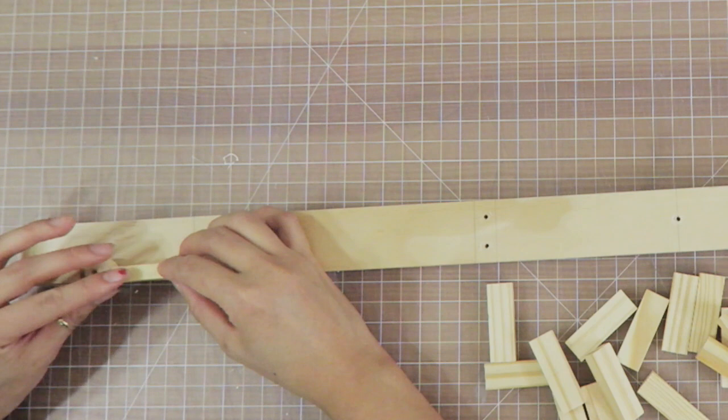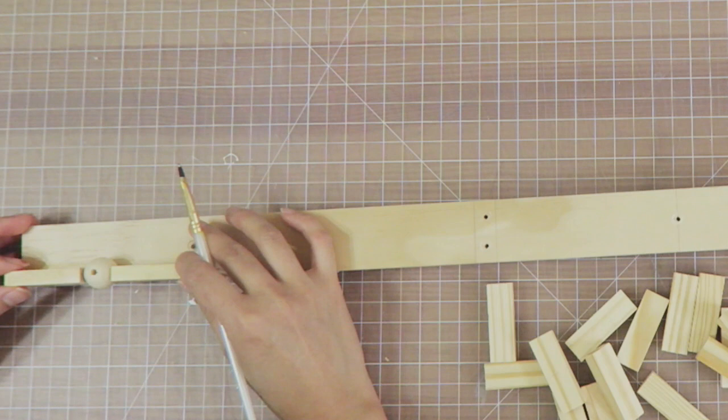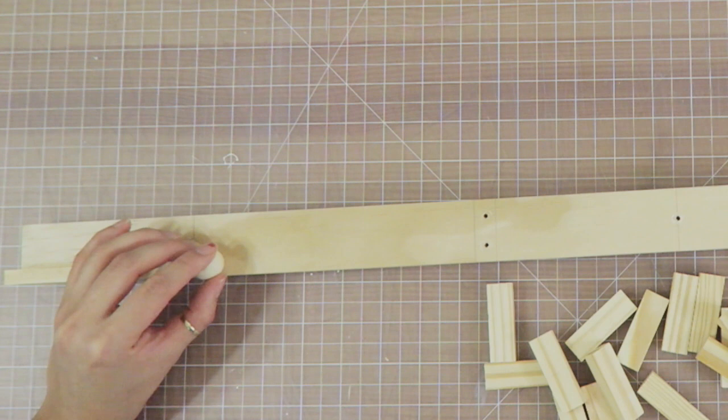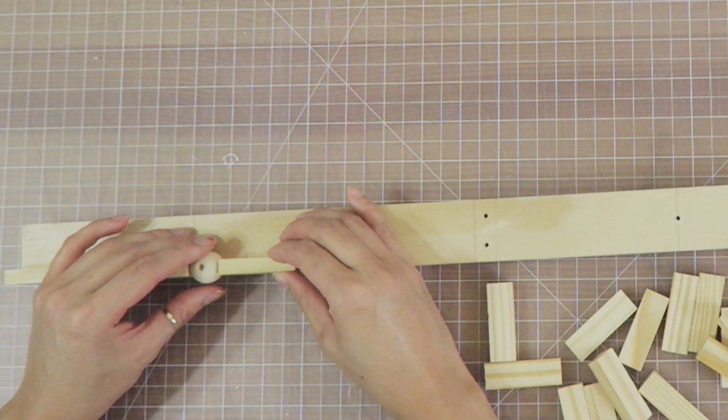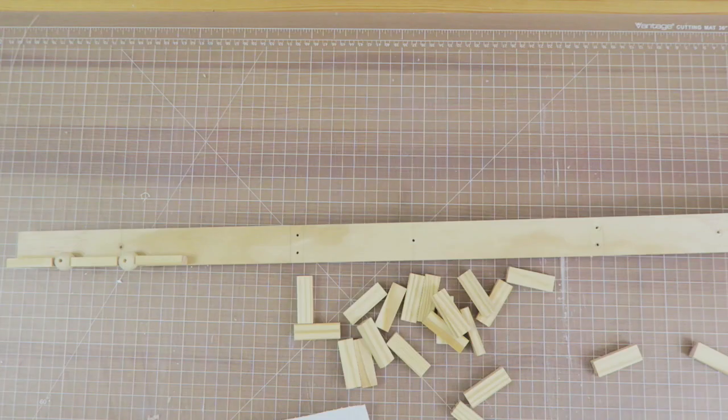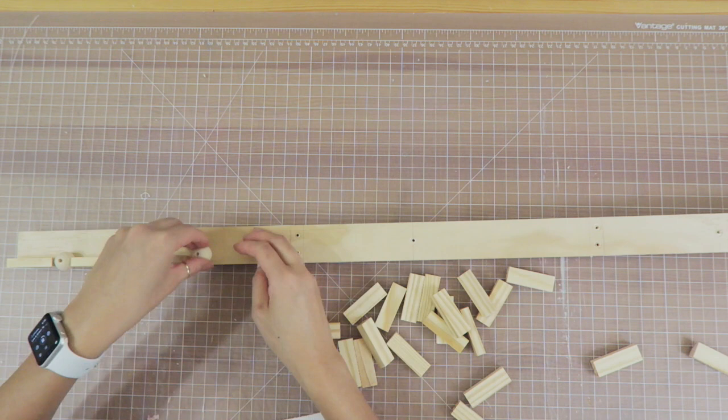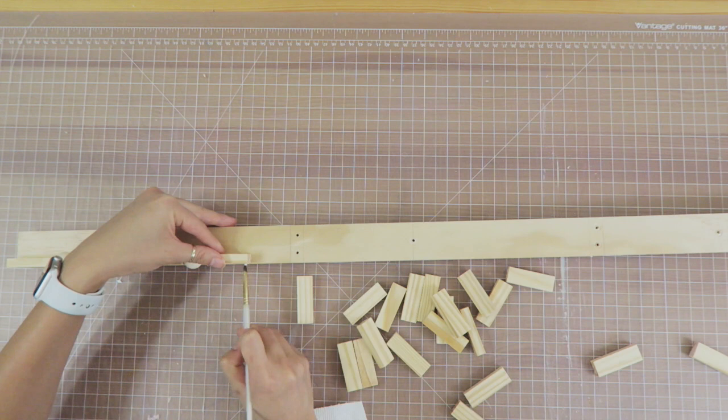I also apply glue at the bottom of the Jenga block and lay it down. Once again, I use the paintbrush to clean up any excess glue. Taking the time to clean up the glue really helps because once it dries, it's a pain to remove, and sanding might mess up the look. I repeat this until I finish the length of the ledge. Once I got to the end, one Jenga block stuck over the ledge a little, so I took a saw and trimmed it down.